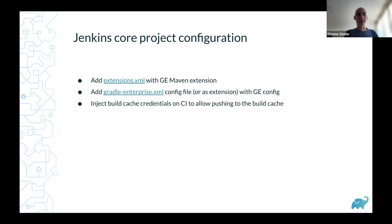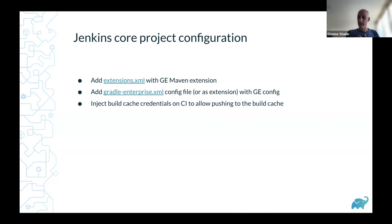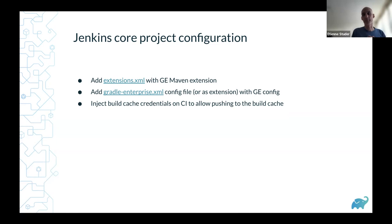To get started, I talked with Mark about using the Jenkins core project. All you'd have to do — once the server is running — is add extensions.xml referencing the Gradle Enterprise Maven extension, add a gradle-enterprise.xml pointing to the server, configure a few details about what to capture, check that in, and from then on every build on CI or locally will capture the build scan and publish it. For CI, inject credentials to write to the build cache while leaving anonymous read access for everyone.